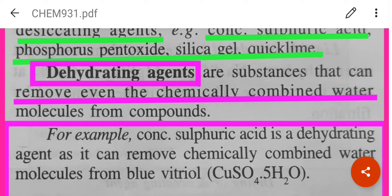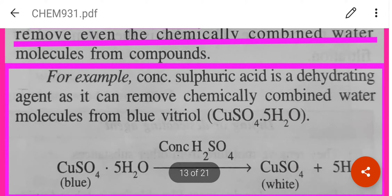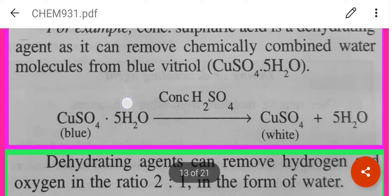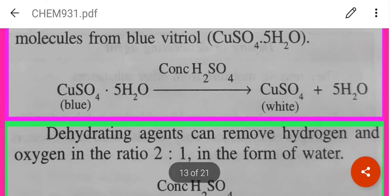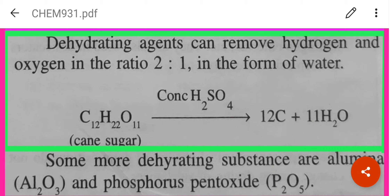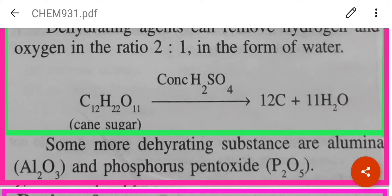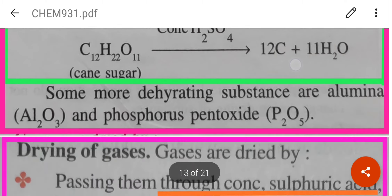Dehydrating agents are substances that can remove even the chemically combined water molecules from compounds. For example, concentrated sulphuric acid removes water of crystallization — it removes the 5H2O from CuSO4·5H2O, leaving behind a white anhydrous powder of copper sulphate. Another example is cane sugar: concentrated sulphuric acid removes the water molecules, and only carbon is left behind — this is called charred sugar, which is black in color. Other dehydrating substances are alumina and phosphorus pentoxide.